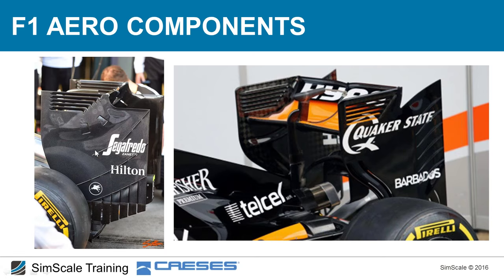Additional elements create upwash to help the rear wing work better. Slots at the leading edge of the end plate channel the turbulent flow from the lower side of the rear tire through these ducts, giving it more energy to reduce the turbulent flow's negative effect in this region.